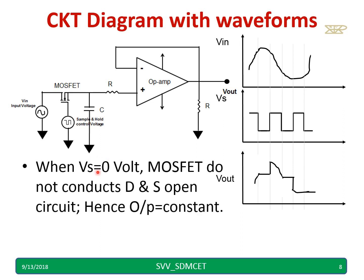Next when Vs is zero, this and this are open circuit. Hence when it is open, only the capacitor voltage that is there will come as the output, that is a constant voltage. You can observe here whenever it is zero the voltage is fixed. This is where you find a constant voltage.